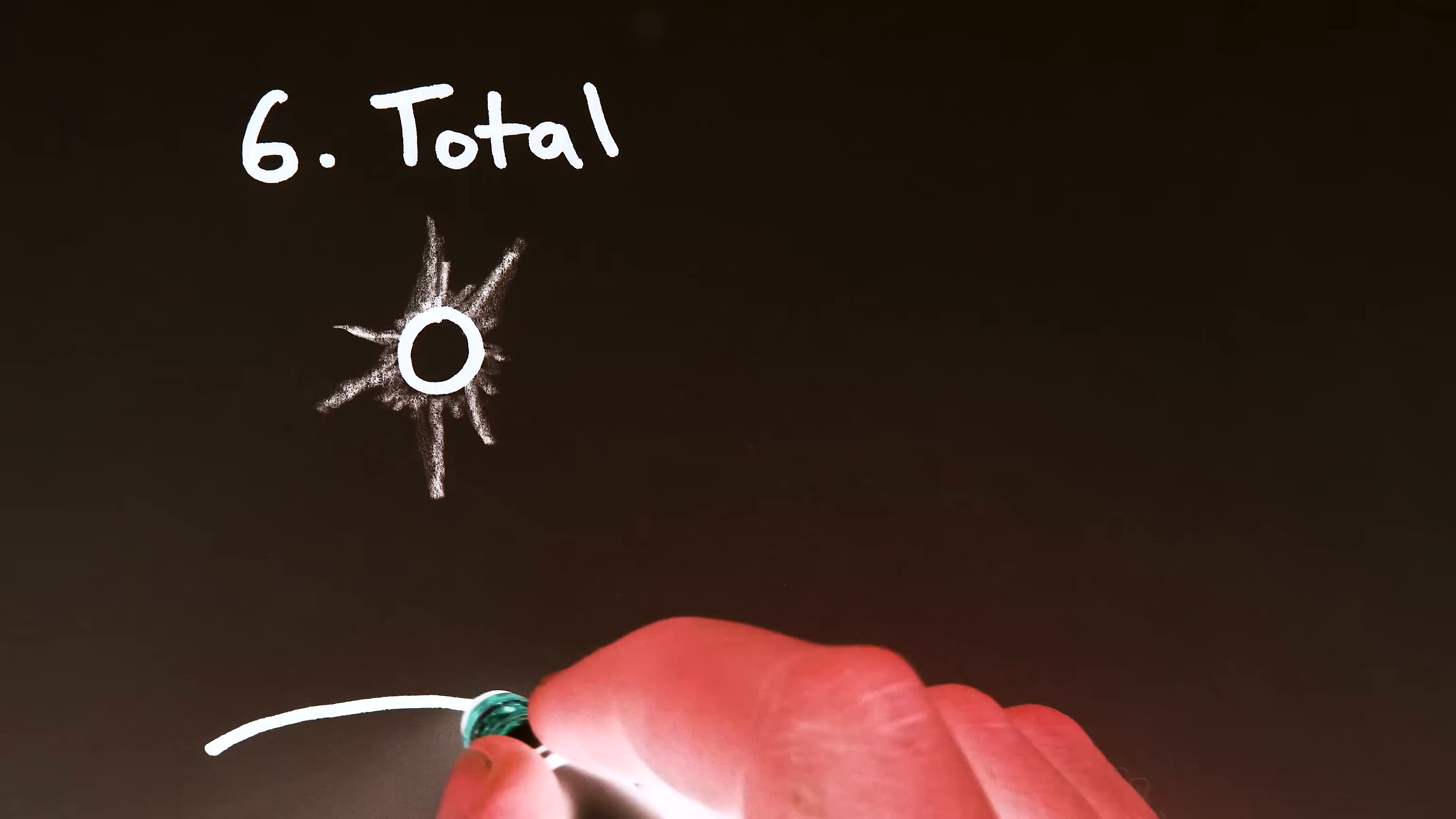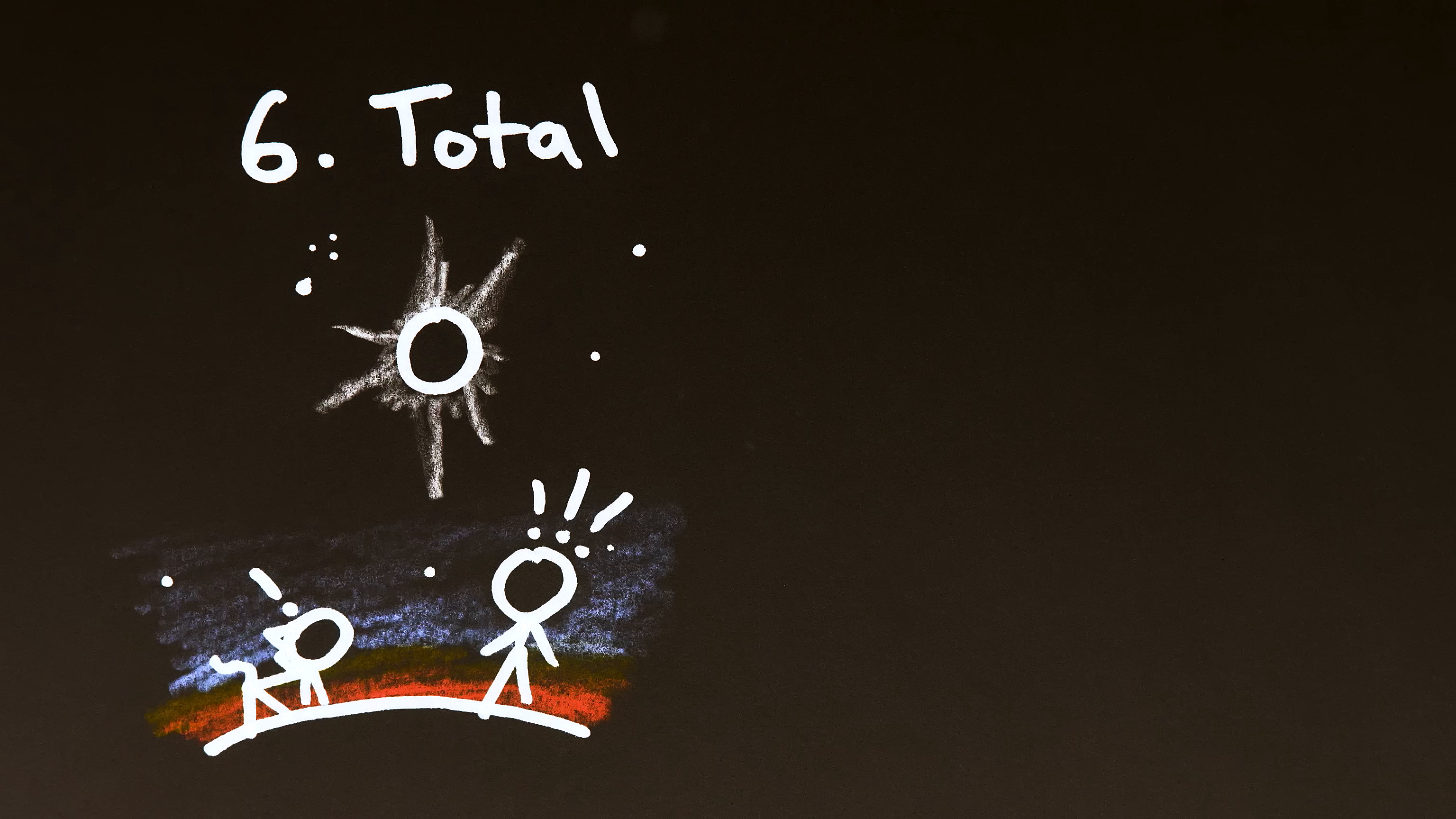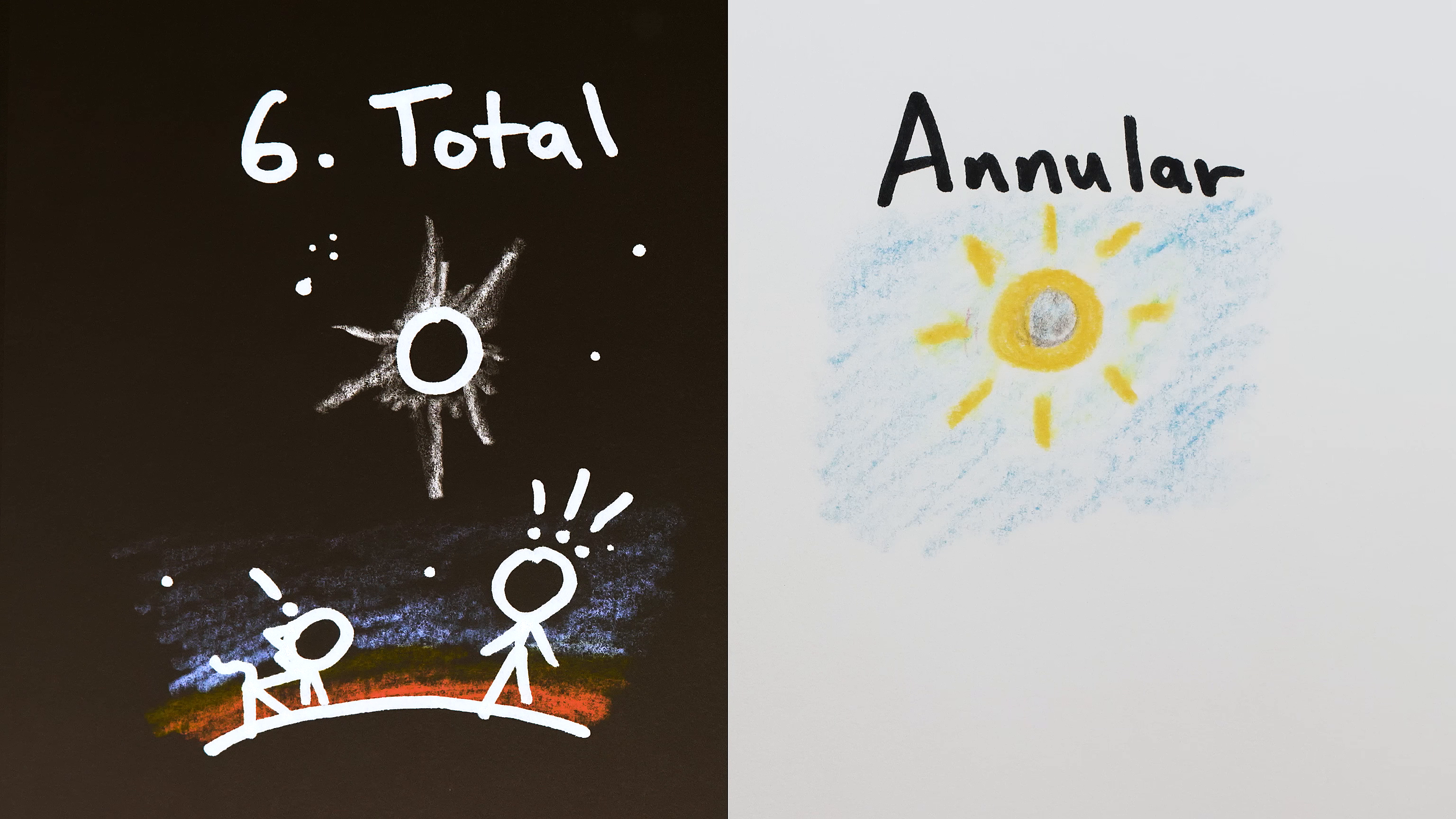And finally, eclipses on Earth are also notable because they can be either total, where the moon fully blocks the sun and is spectacular, or annular, where the moon appears smaller than the sun and never completely obscures it.